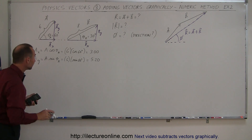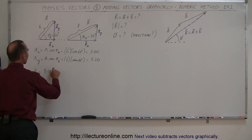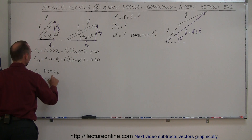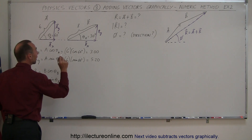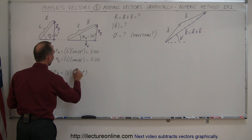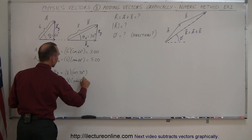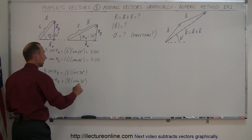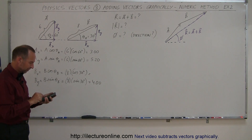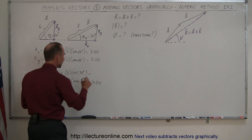Now we do the same for vector B. B sub x equals B times cosine of the angle, and B sub y equals B times sine of the angle. The magnitude is 8, so B sub x equals 8 times cosine of 30 degrees, and B sub y equals 8 times sine of 30 degrees. The sine of 30 is one half, so B sub y equals 4.00. The cosine of 30 is 0.866, so multiplying by 8 gives B sub x equals 6.93.